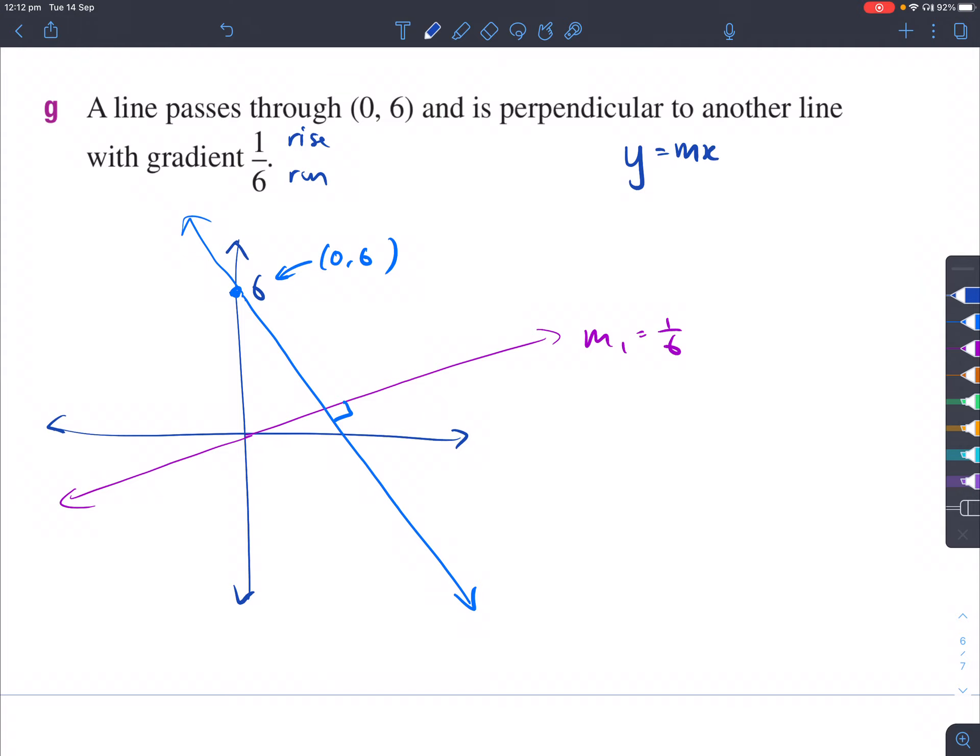We write down y equals mx plus b. Now, if m1 is equal to 1 over 6, then m2 would equal the negative reciprocal of that one. So if you swap that around and make that negative, it would be negative 6 instead. And we put that right here. So that y would equal negative 6x plus b.